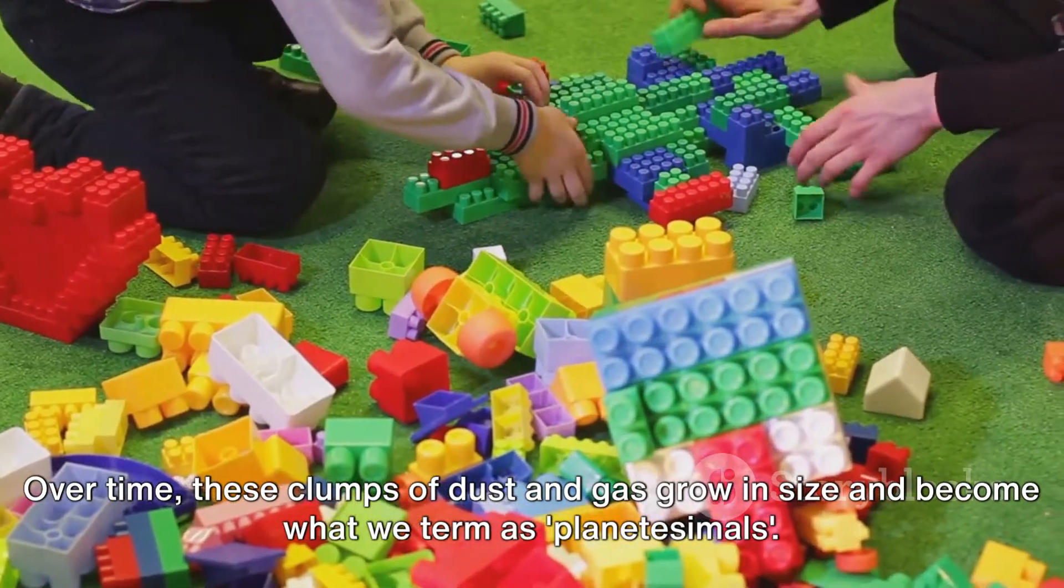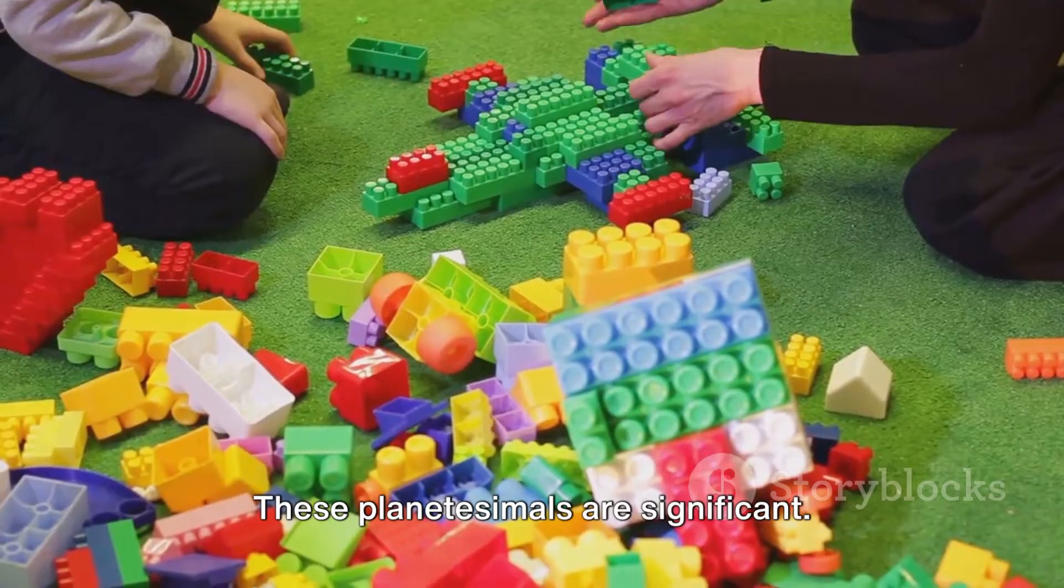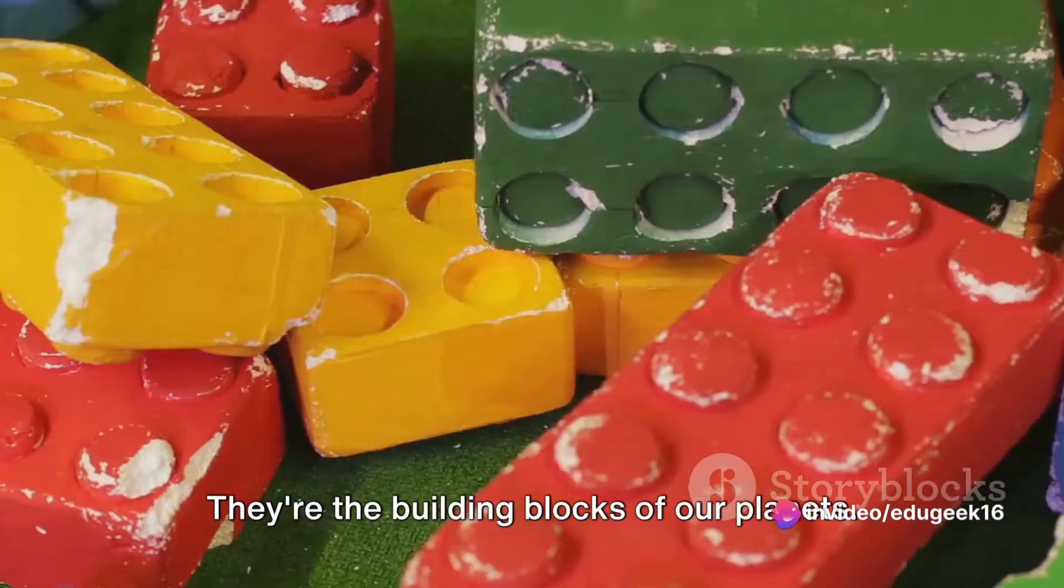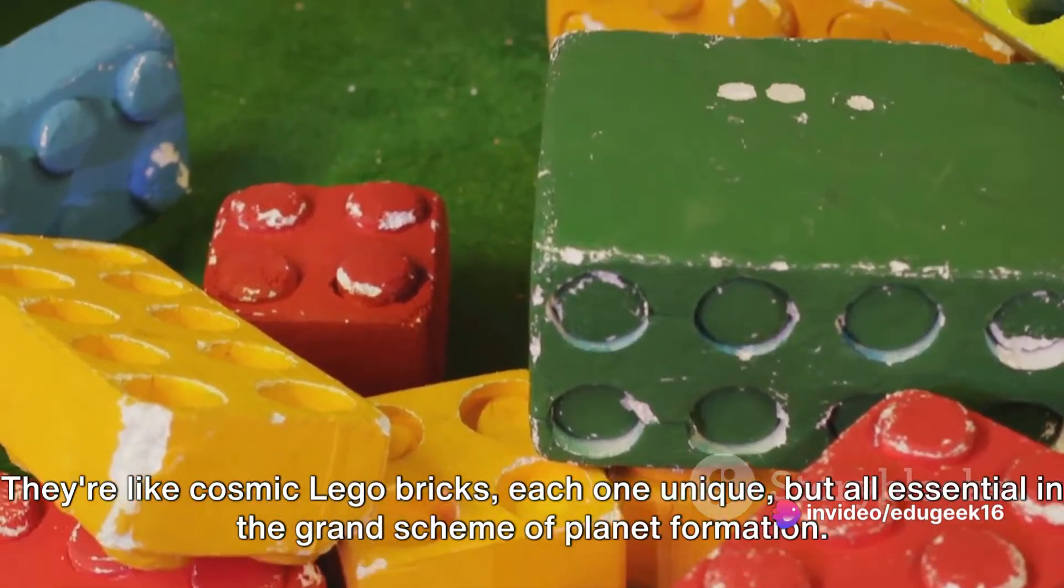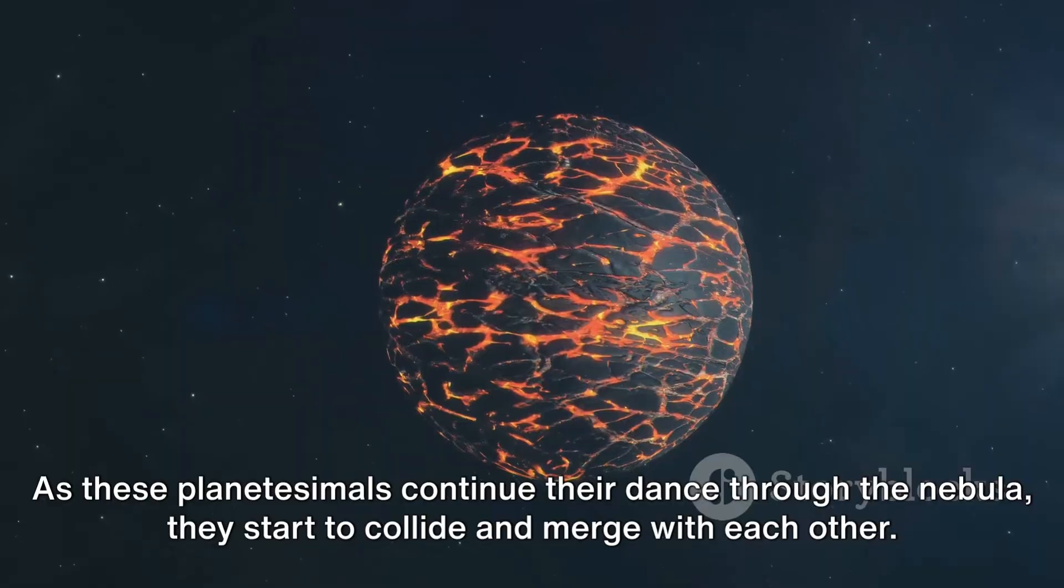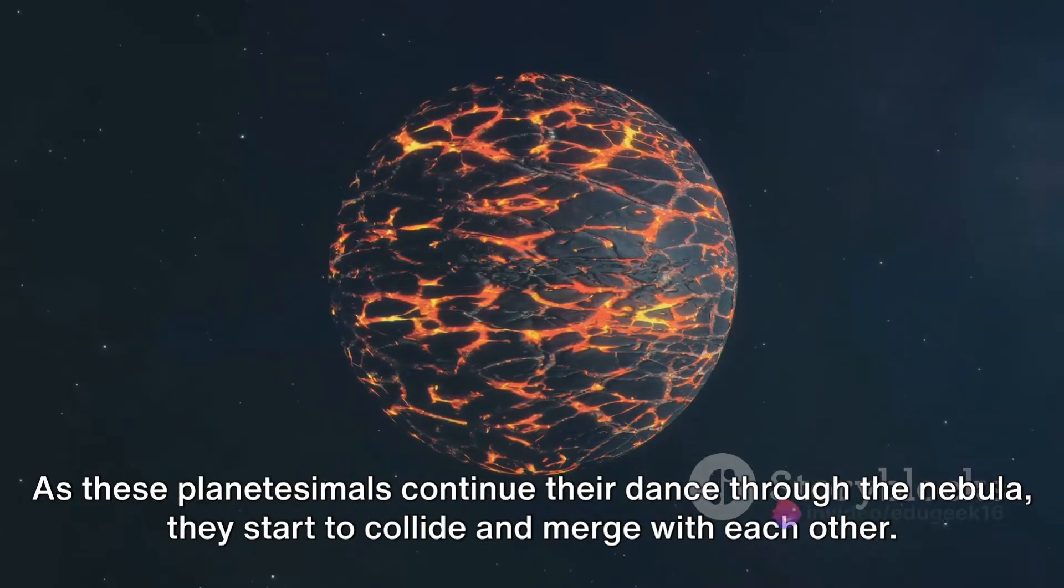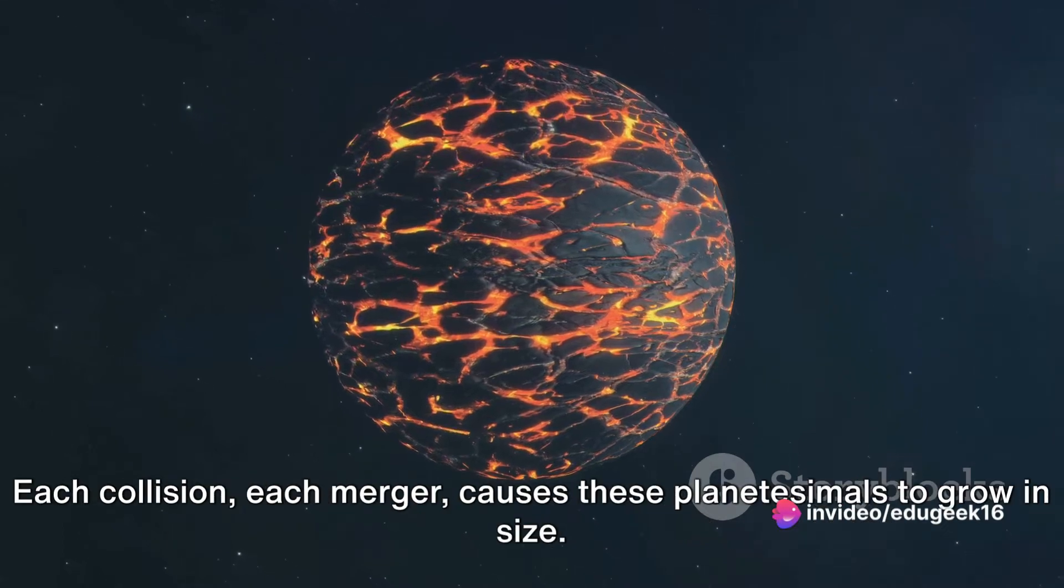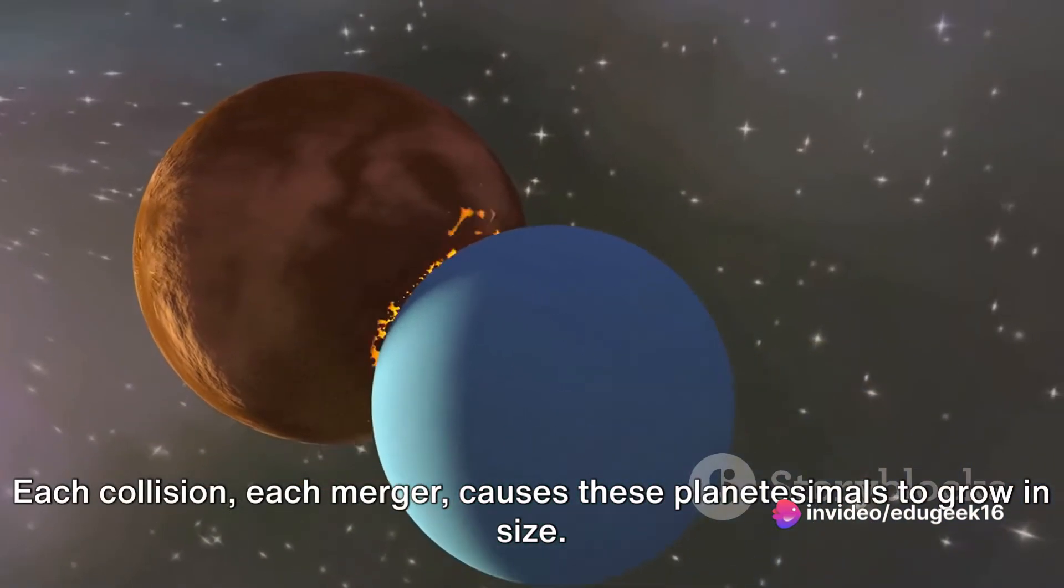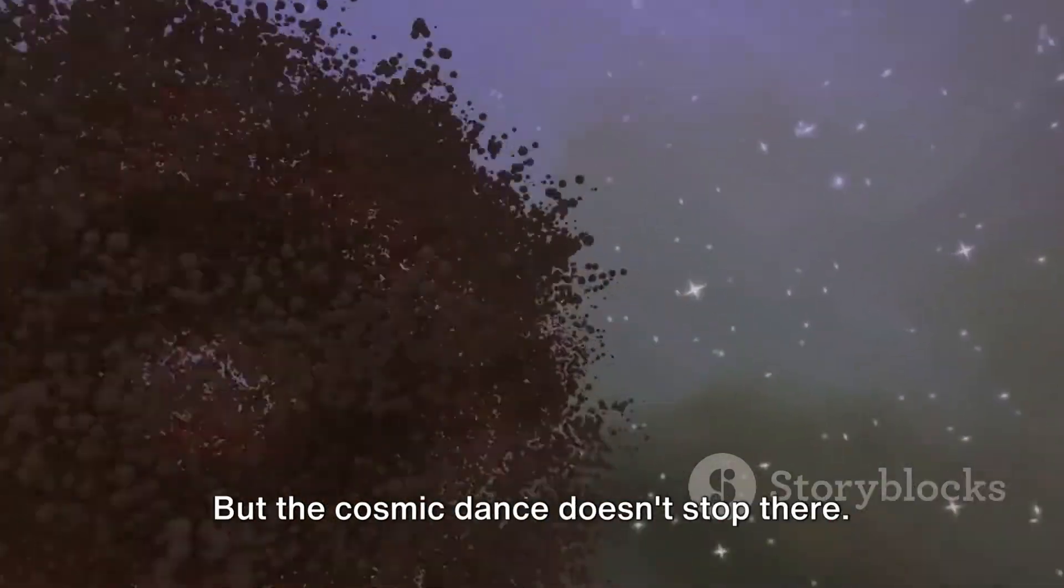Over time, these clumps of dust and gas grow in size and become what we term as planetesimals. These planetesimals are significant, they're the building blocks of our planets. They're like cosmic Lego bricks, each one unique but all essential in the grand scheme of planet formation. As these planetesimals continue their dance through the nebula, they start to collide and merge with each other. Each collision, each merger, causes these planetesimals to grow in size.